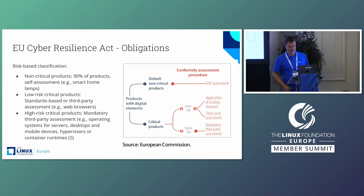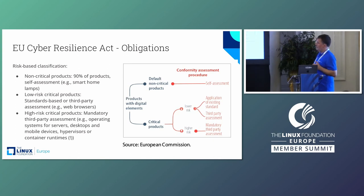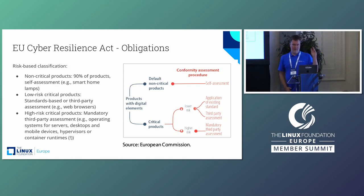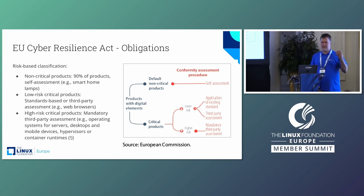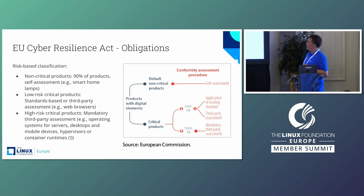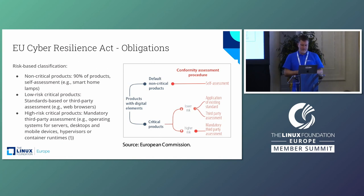The obligations in the CRA are staggered in three groups based on risk. There are non-critical products — the assumption is that 90% of all digital products are in this group. By the way, digital products mean software and hardware; that's another distinction the CRA does not make. For non-critical products, the expected procedure is self-assessment of compliance with the CRA — you can basically self-declare. For low-risk critical products, for example web browsers, you can either apply an existing standard or go for a third-party assessment.